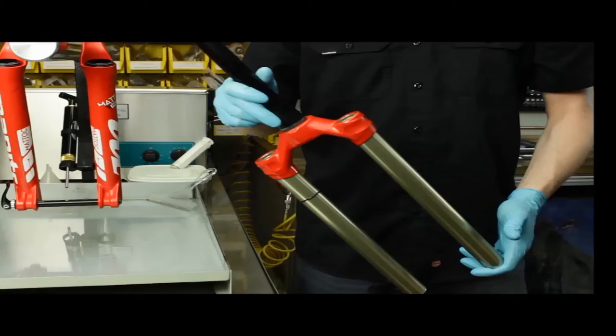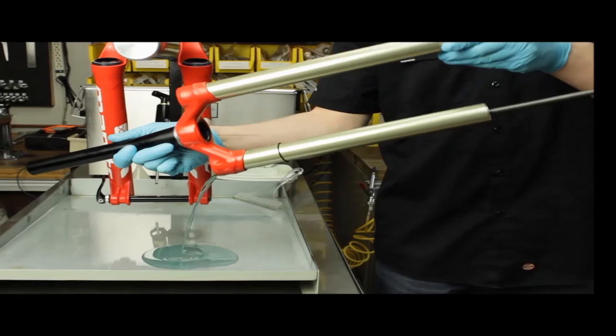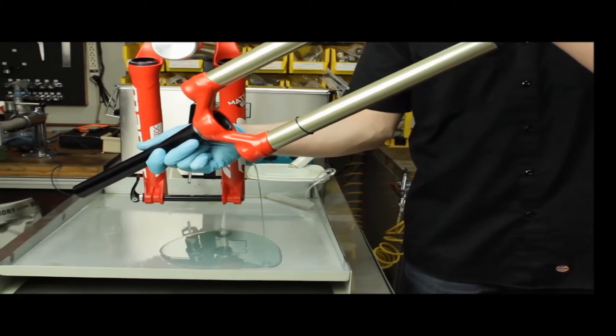With the MC squared assembly extracted, we can now pour the majority of the fork fluid out of the inner leg of the crown steer assembly.